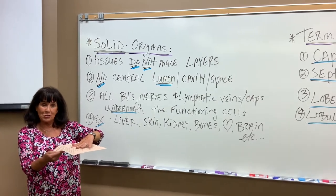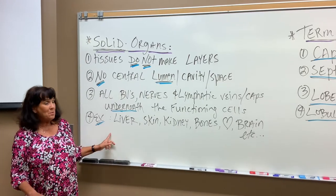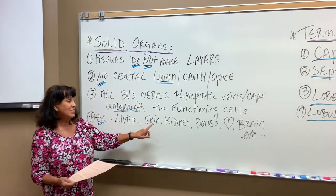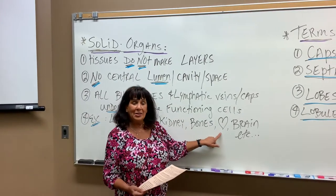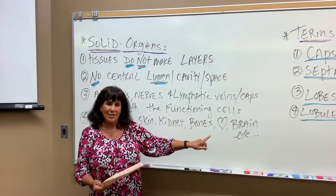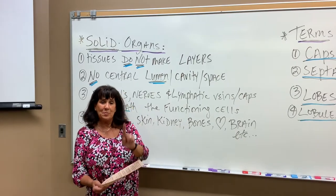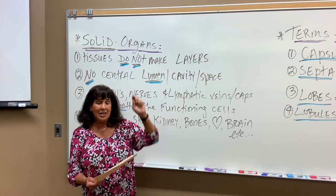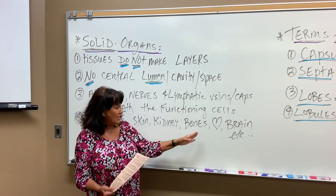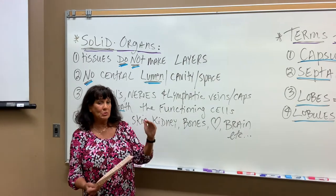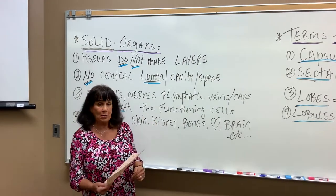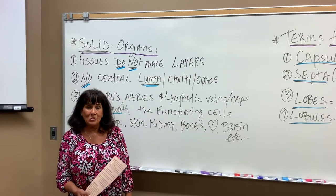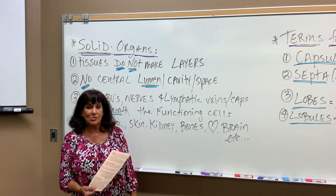Some examples of solid organs would be the liver, skin, kidney, bones, your heart. The heart has a muscle septum down the middle, so blood goes in and out one side on both sides — it doesn't go straight through, there's no lumen taking it from the right to the left. The brain is another example. Skeletal muscles are solid organs.